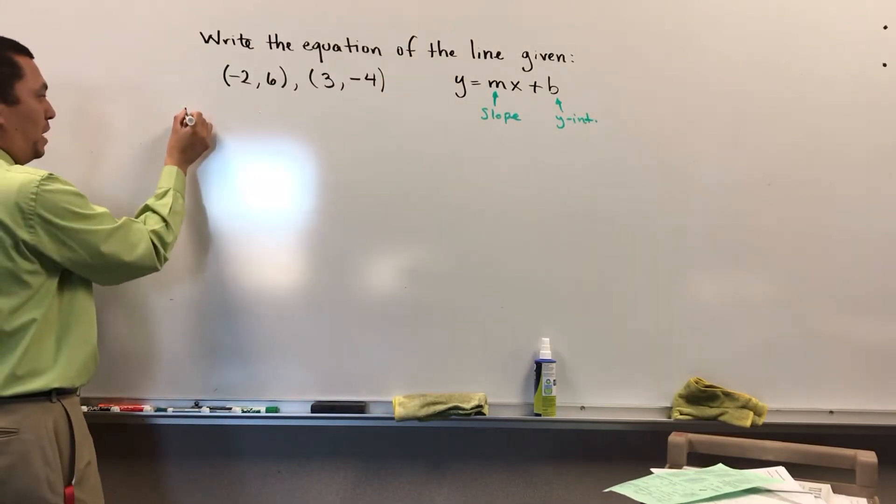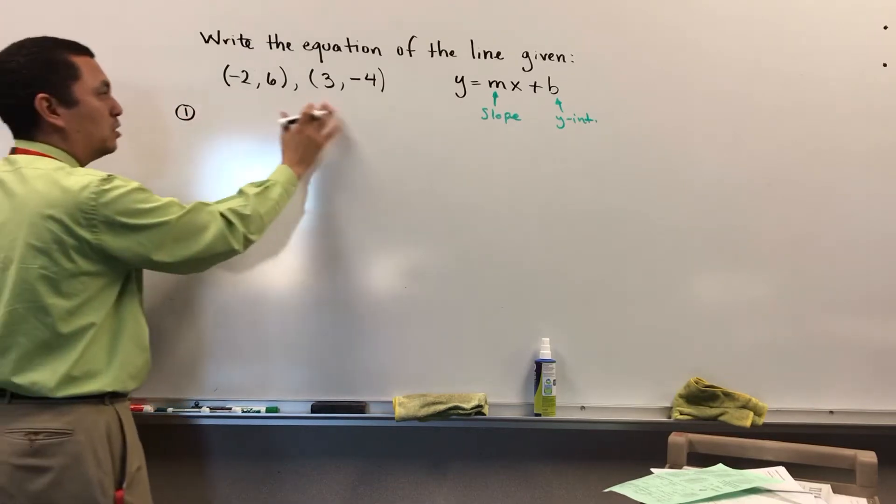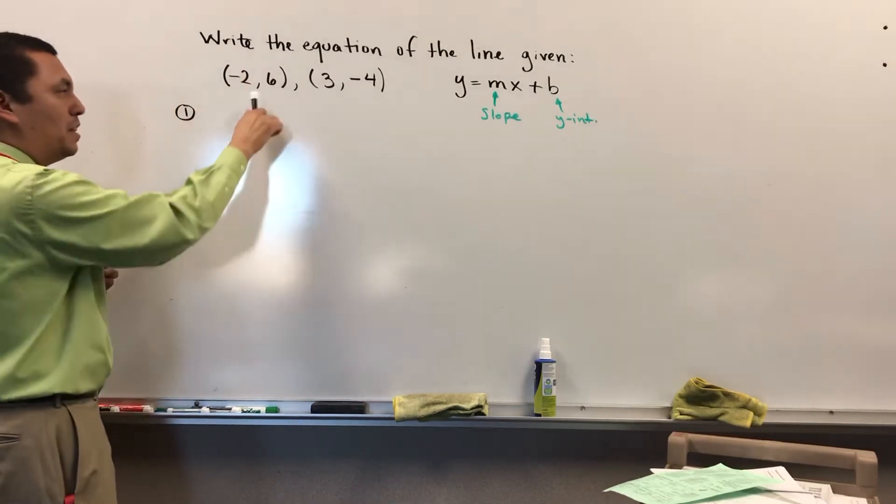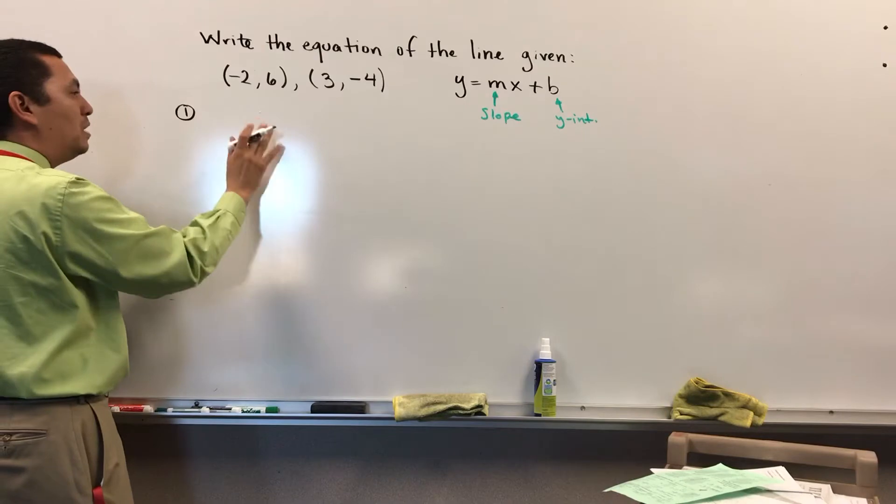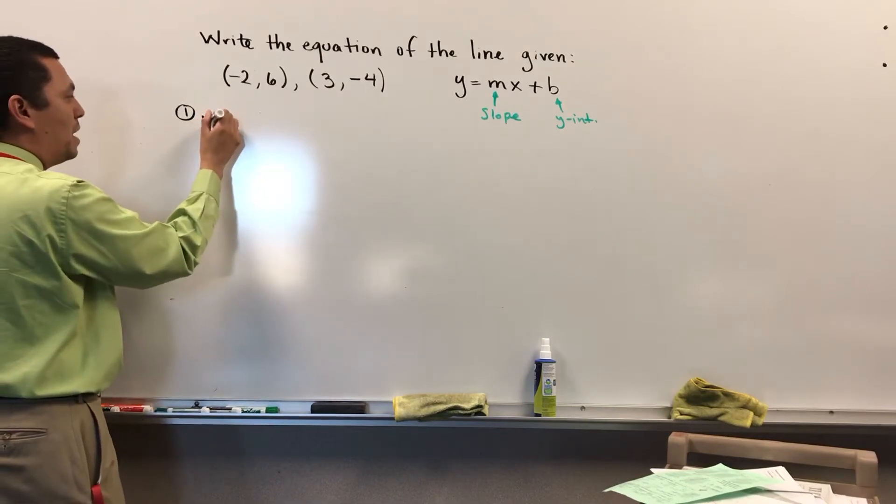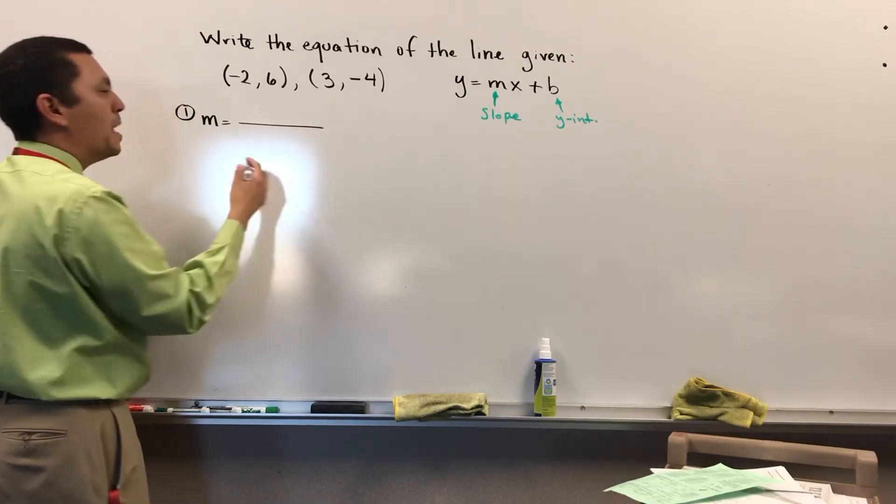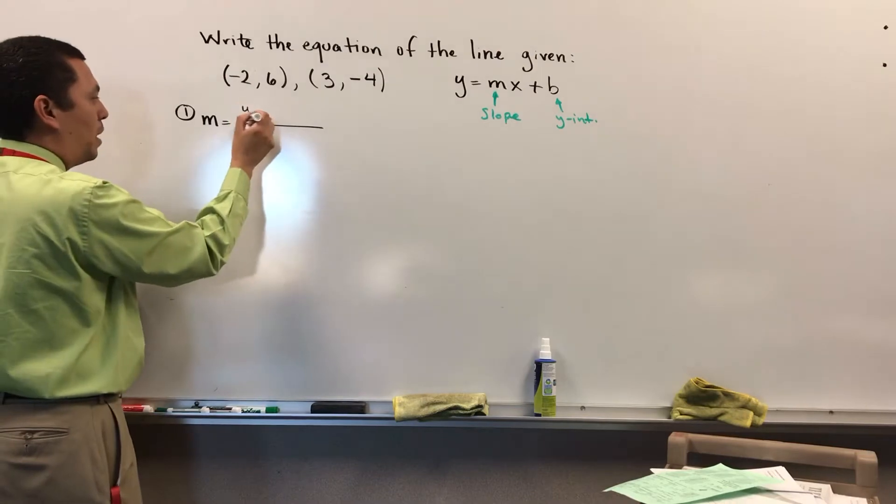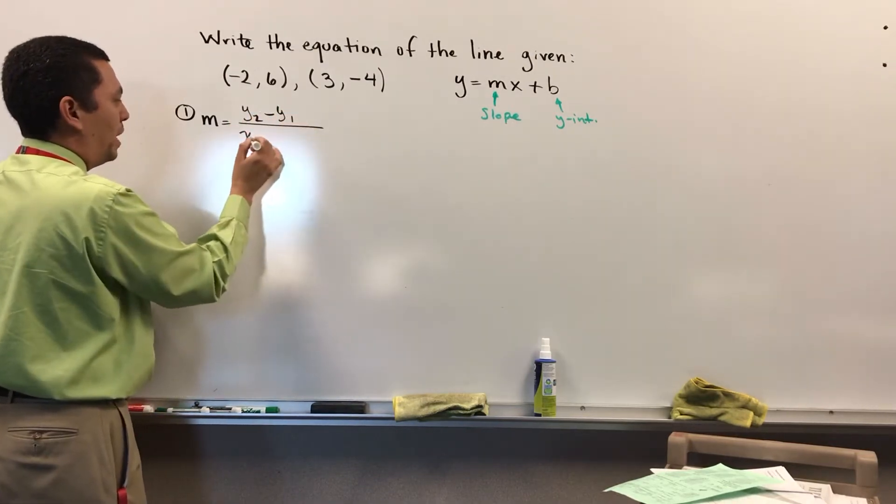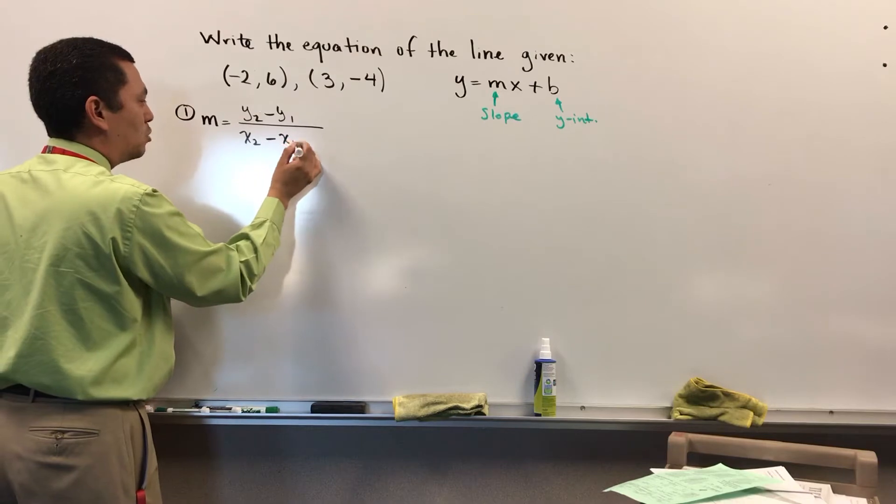So the first step in this case is going to be find the slope. Slope is not given, they are giving me two points, so I need to find the slope first. We know the formula of the slope: y2 minus y1 over x2 minus x1.